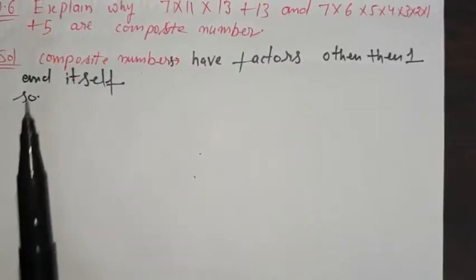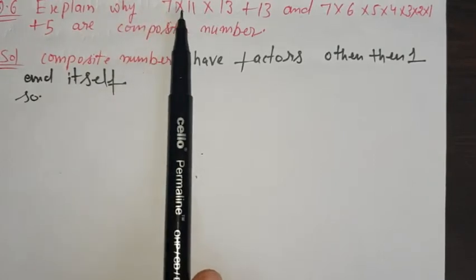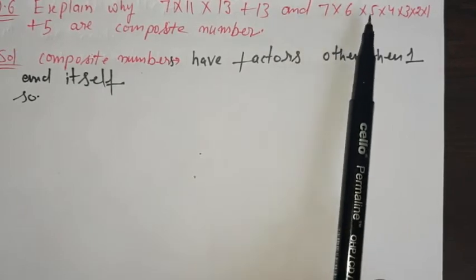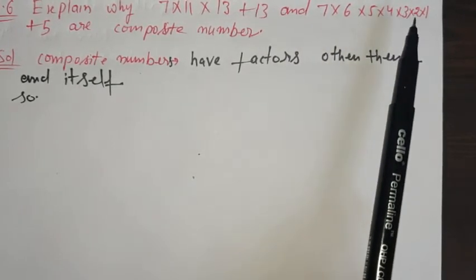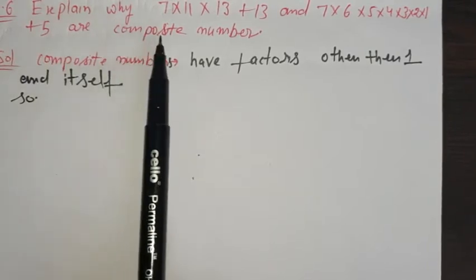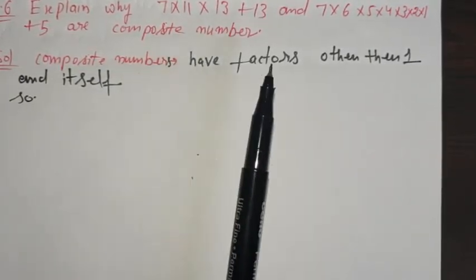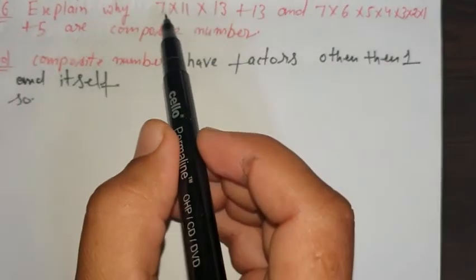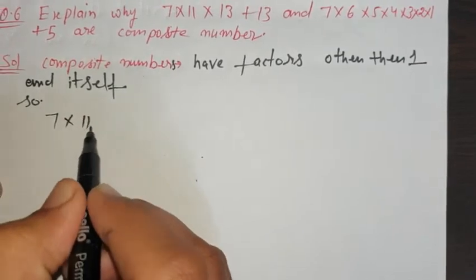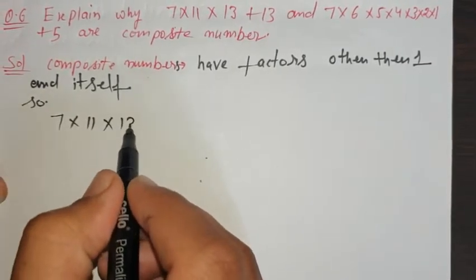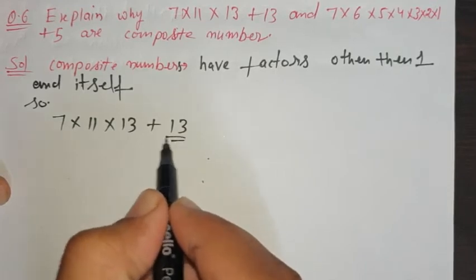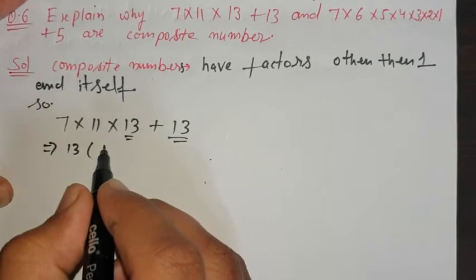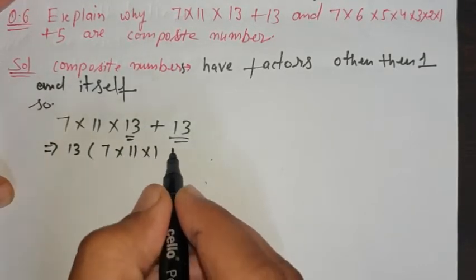Question number 6: Explain why 7 × 11 × 13 + 13 and 7 × 6 × 5 × 4 × 3 × 2 × 1 + 5 are composite numbers. Composite numbers are those which have factors other than 1 and itself. For the first part: 7 × 11 × 13 + 13 — take 13 as common.